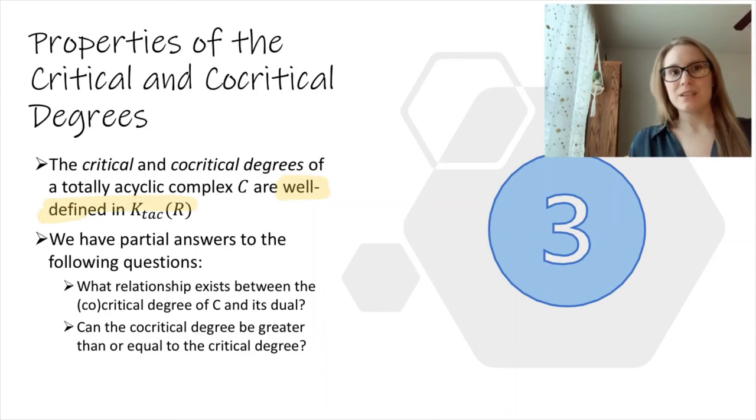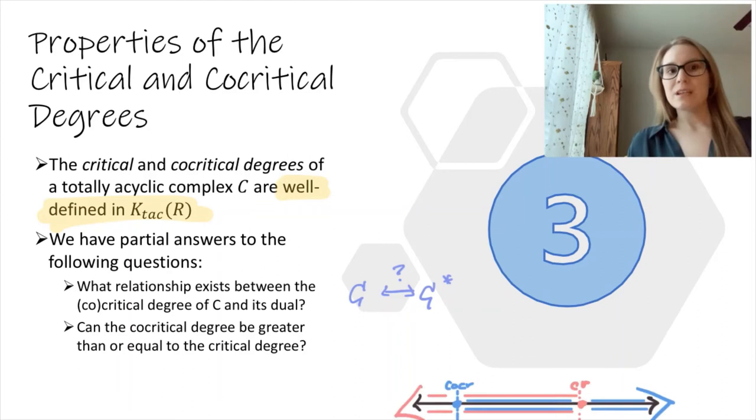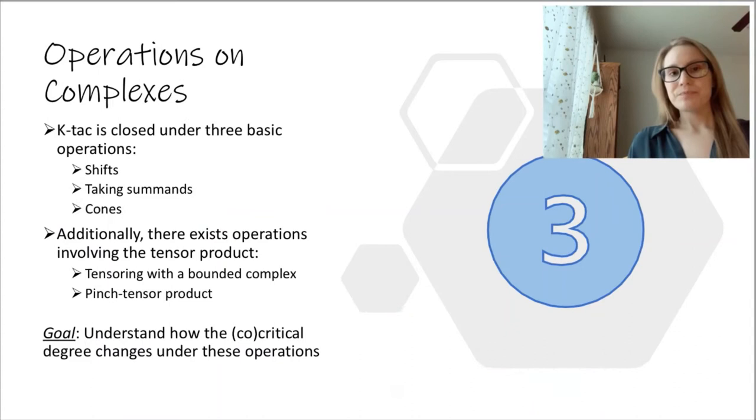These concepts are, in fact, well defined in KTAC, meaning they respect homotopies. I have also studied some properties, and we have partial answers to the following questions. First, what relationship exists between the critical and co-critical degrees of a complex and those of its dual? Second, can the co-critical degree of a complex be greater than the critical degree?